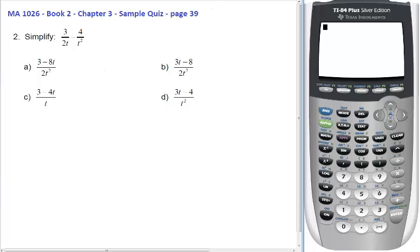So let's have a look at the solution now. We have 3 over 2t minus 4 over t squared. So 3 over 2t minus 4 over t squared.